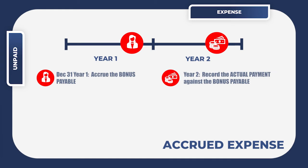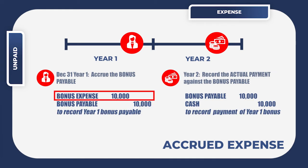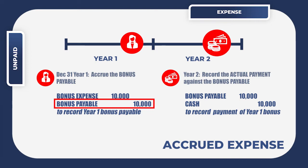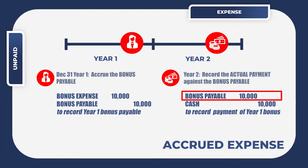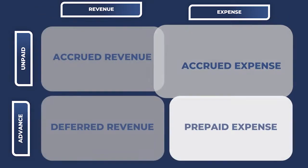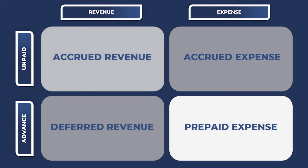The most common way of accounting for accrued expenses is to debit the related expense and credit a liability account. The liability account signifies the company's intent to pay the bonus in the future, while recognizing that the impact to the company's performance should happen in year one. What happens in year two is that the company will just debit the liability account to decrease it and credit cash upon payment of the bonus.